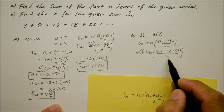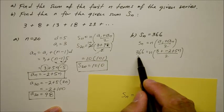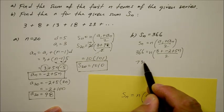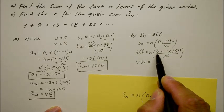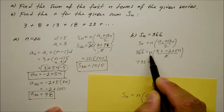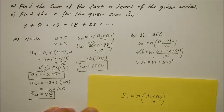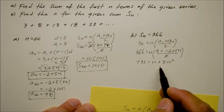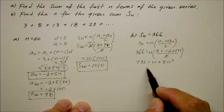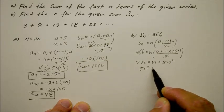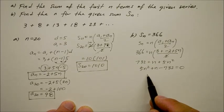We eliminate the denominator 2 by multiplying both sides of the equation by 2. So 366 times 2 becomes 732. That equals n times the quantity of 3 plus negative 2, which is 1, so that's n, times 5n which becomes 5n squared. It's starting to look like something. Bringing 732 to the right side, we end up with the standard form: 5n squared plus n minus 732 equals 0. We end up with a quadratic equation.